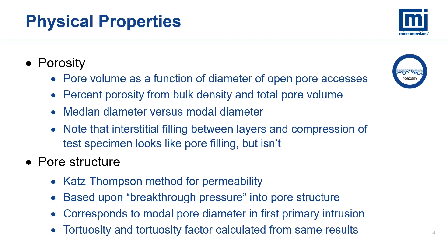In addition to pore volume and porosity, the pore structure can be characterized using the method of Katz and Thompson to determine permeability based upon the breakthrough pressure in the first primary intrusion of mercury into the pore structure. Similarly, the tortuosity and tortuosity factor can be determined.